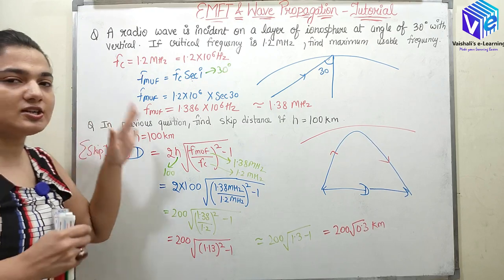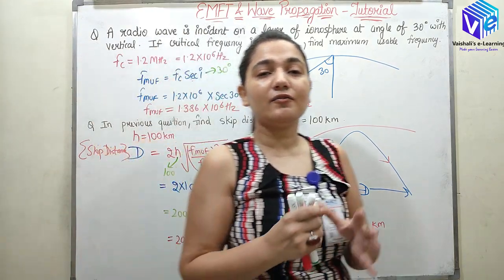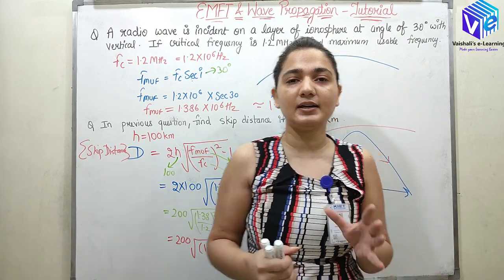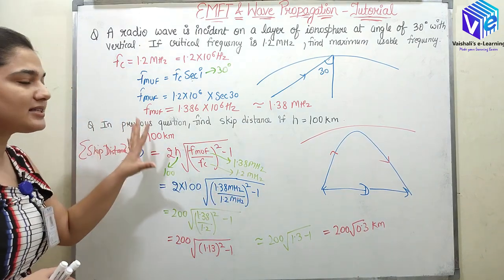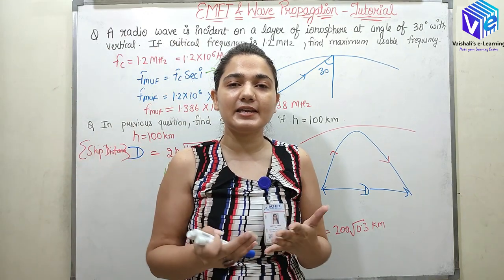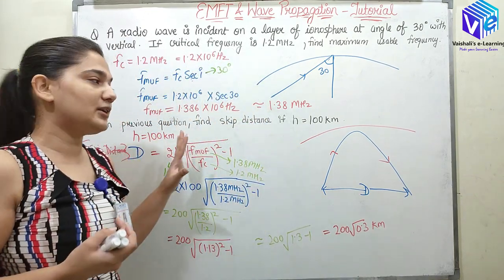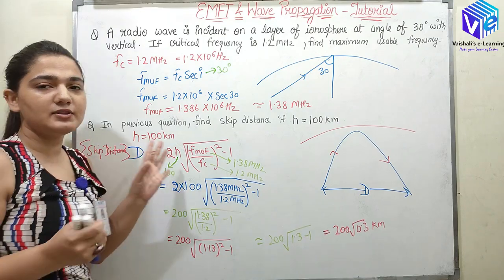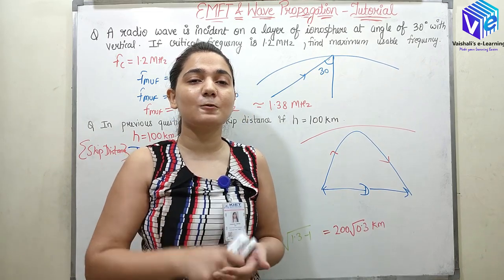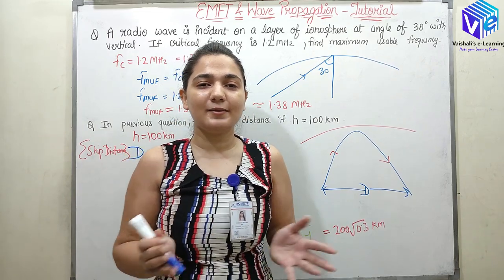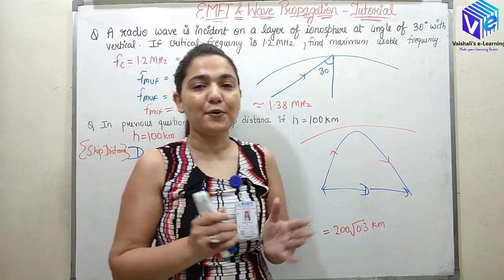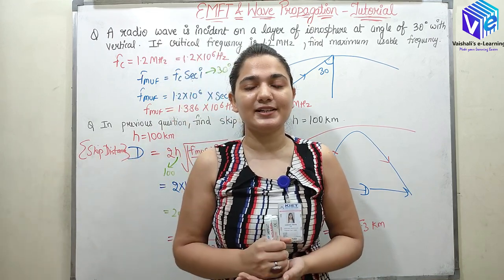So I hope now you understood how I found out the skip distance, how I found out the maximum usable frequency, and what is the relationship between all of them. Actually unit 5 or the wave propagation unit is mainly based upon the theoretical part. The numerical questions will be this easy only. If it will come, the numerical portion will be very easy and it will be only direct formula-based questions. Here we knew the formula, we just put the various values and we found out the computation. Wave propagation is a scoring unit.